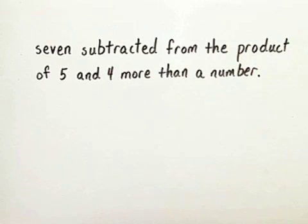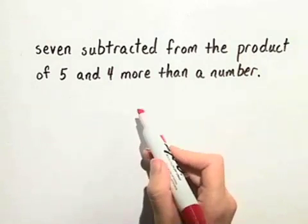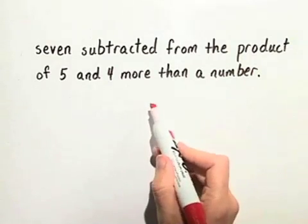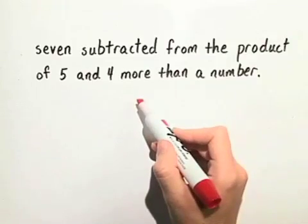So we have 7 subtracted from the product of 5 and 4 more than a number. When we have a sentence like this, we have to try to figure out where to start.